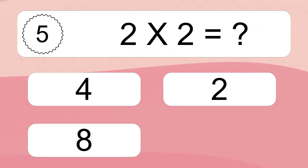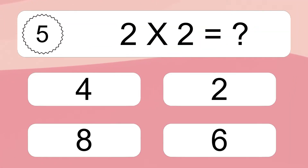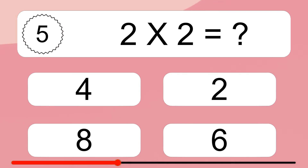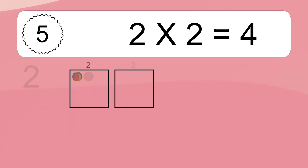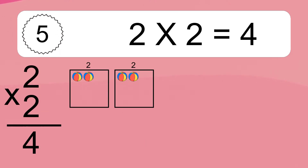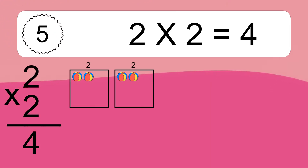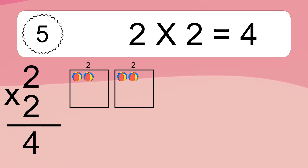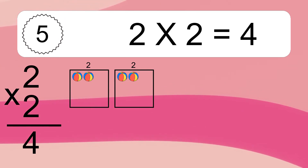Two times two equals what? Two times two equals four. We have two boxes and each box has two colorful balls inside. If you count all the balls in all the boxes together, you will have two times two balls. This equals four balls.